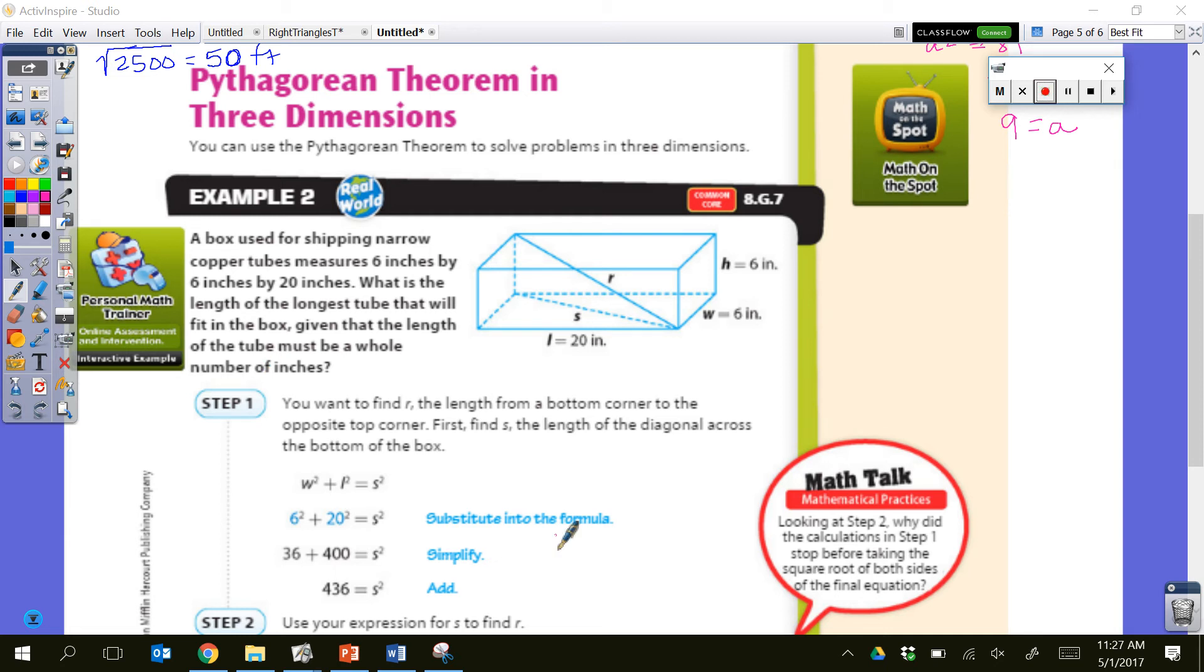So looking at a box here, we have a box that's used for shipping, and it's shipped narrow copper to measure six inches by six inches by 20 inches. That's giving us our dimensions here. We've got six inches by six inches, and then 20 inches. So our length is 20, our width is 6, and our height is also 6. What is the length of the longest tube that will fit in the box, given that the length of the tube must be a whole number of inches?